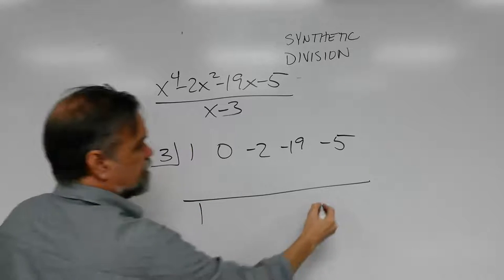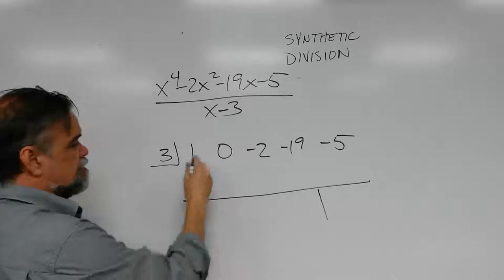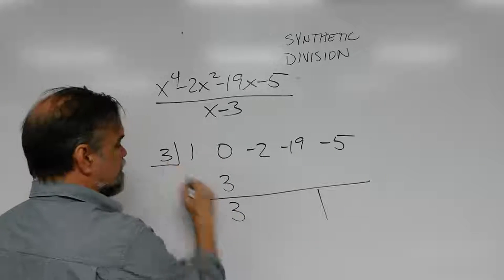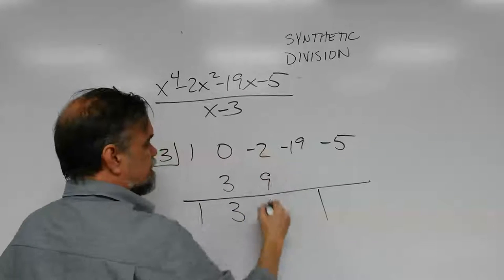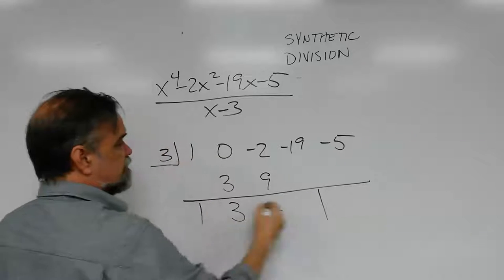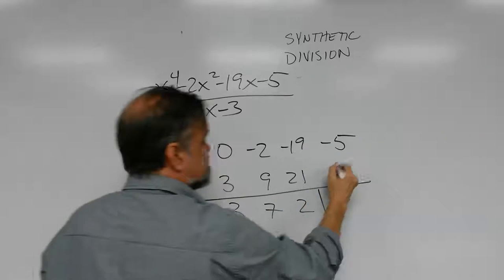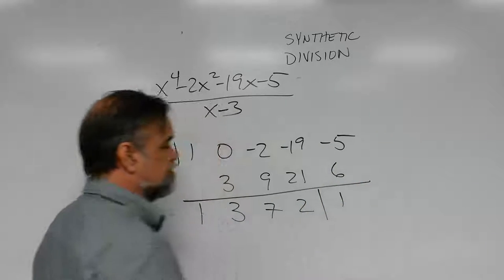Drop down the 1. 3 times 1, 3. 0 plus 3, 3. 3 times 3, 9. Negative 2 plus 9, 7. 3 times 7, 21. Negative 19 plus 21 is 2. 3 times 2 is 6. And I have a remainder of 1.